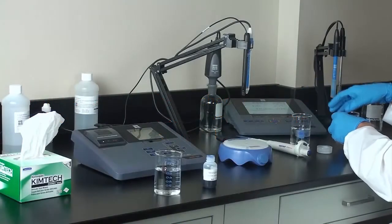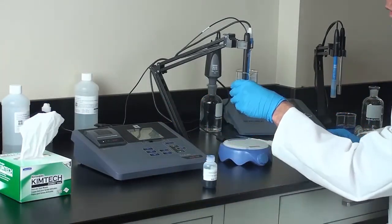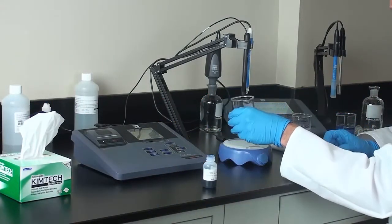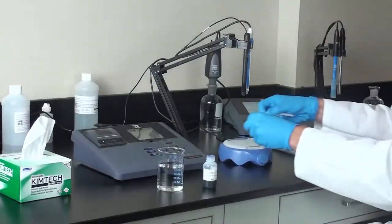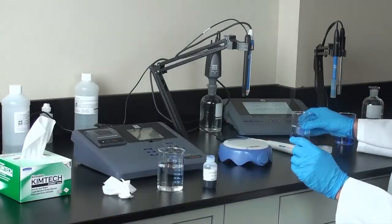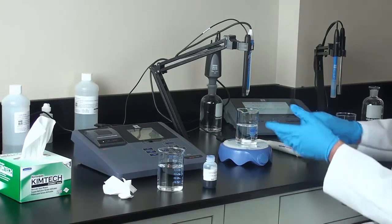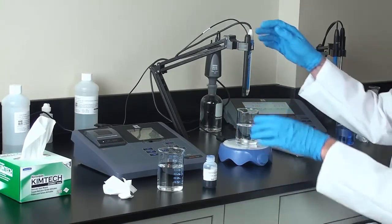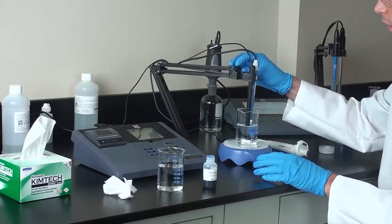Our second point is 100 mg per liter. You want to make sure that you rinse your electrode off before placing it in the next solution. Then just like before, we will place our next standard on the stir plate. So this standard is 100 mg per liter. We will put the electrodes in solution here.